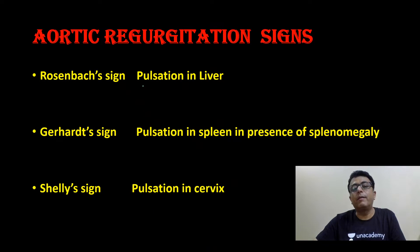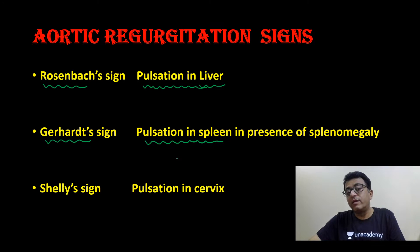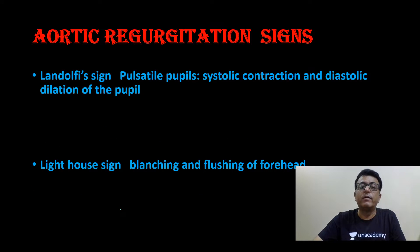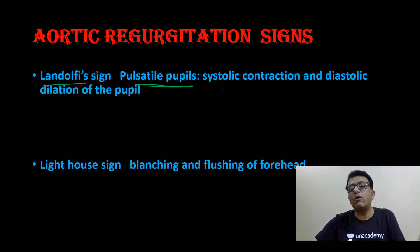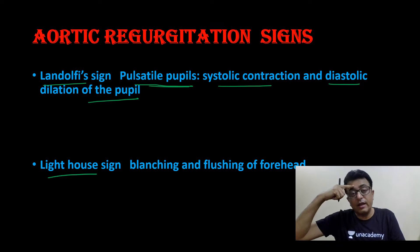Rosenbach sign is pulsation in the liver. Gerald sign is pulsation in the spleen. Shelley sign is pulsation in the cervix. Landolfi sign is pulsatile pupil — the pupil alternately contracts and dilates. Lighthouse sign is blanching and flushing of the forehead.